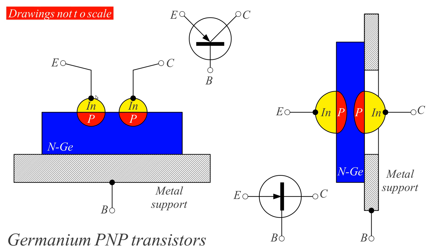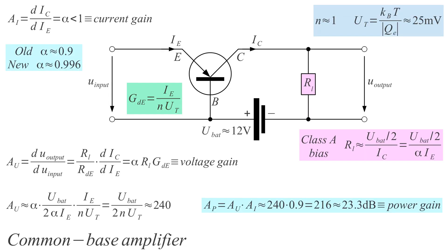With old transistors, alpha was less than 0.9, so such a device did not have any current gain at all — the current gain was less than unity because alpha by definition is less than unity. Some of the emitter current has to flow to the base. So this device did not possess current gain, but it did possess voltage gain. If I change the input voltage by a small amount, I may get a large change in the collector current.